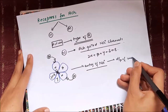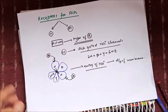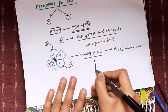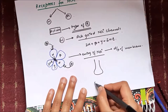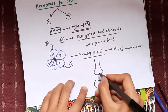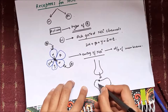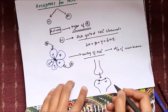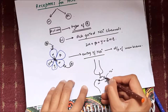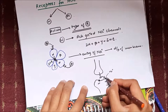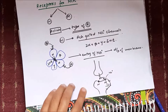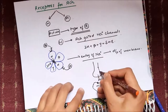For example, in a ganglion, the presynaptic neuron releases acetylcholine which acts on nicotinic receptors present on the postsynaptic neuron. Once these nicotinic receptors bind acetylcholine, they cause influx of sodium ions into the neuron, which causes depolarization of the second neuron.